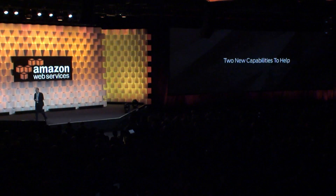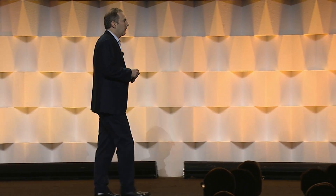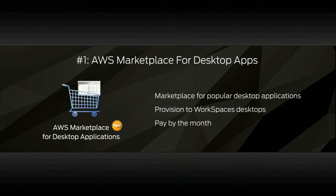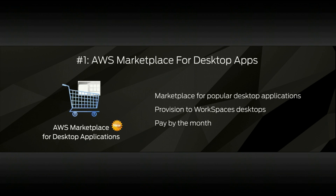We have two capabilities that we're going to announce today. The first is the AWS Marketplace for desktop apps. What that will provide is a marketplace for the popular desktop applications that companies and customers are used to using. You'll be able to provision them easily to run on Workspaces. And then instead of the multi-year licensing model, which has been the norm forever, you pay by the month — a very different pricing model than has existed in the past.